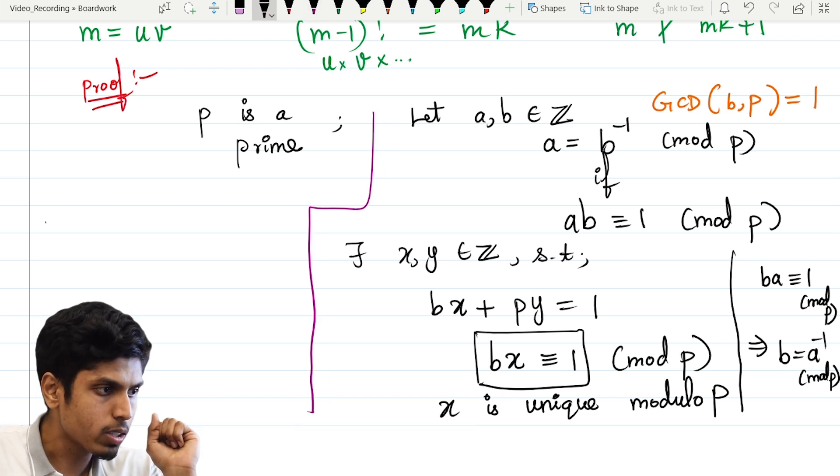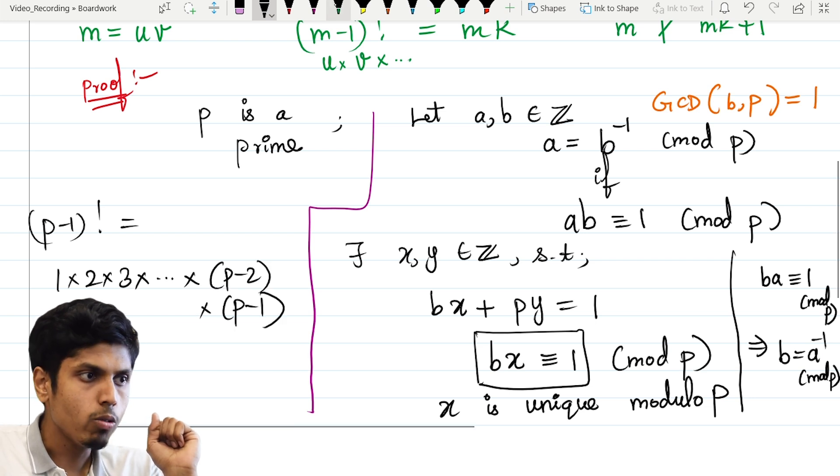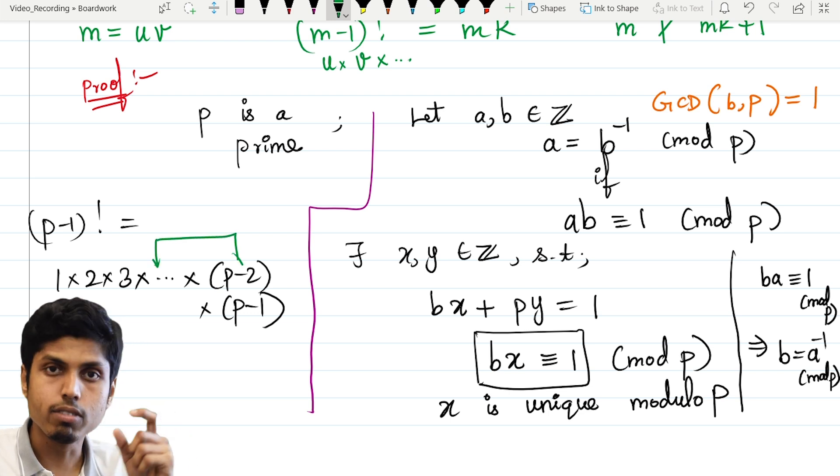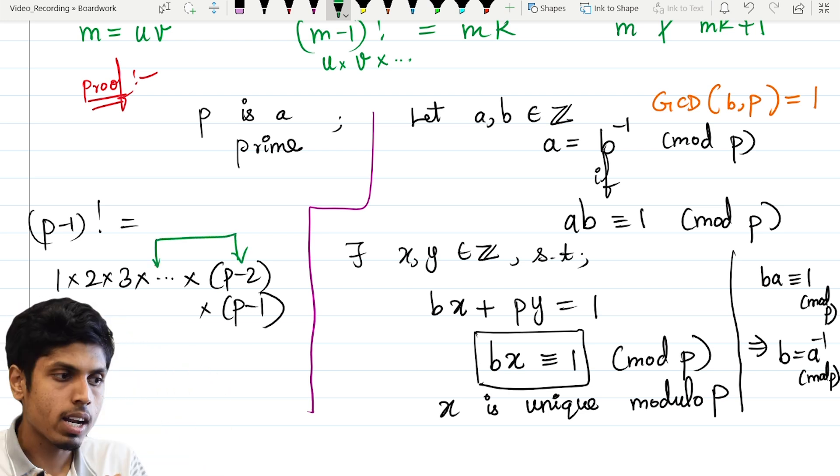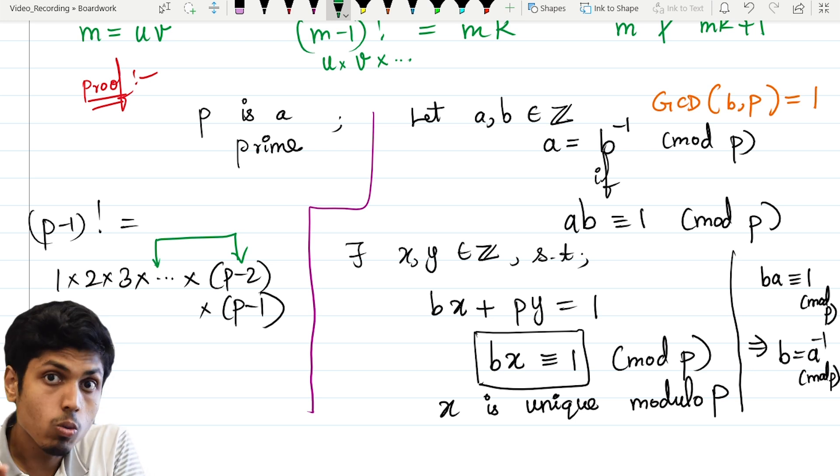Now, let's go back to the proof of this theorem. So we learned what are multiplicative inverses. Getting back, we know p minus 1 factorial is nothing but 1 into 2 into 3 all the way till p minus 2 into p minus 1. Now, if you consider every number, I can pair them up with its inverse, so that they both multiply and make the resulting number congruent to 1.